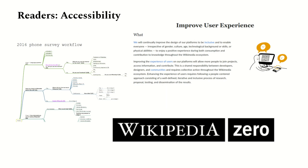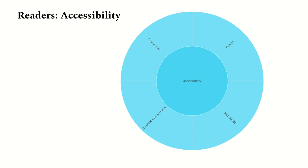The next phase set in the readership dimension is accessibility. The accessibility gap reflects all those technical barriers which prevent people from accessing free knowledge. Gaps in the accessibility phase set are inspired by the improved user experience recommendation of the 2030 movement strategy, which encourages everyone in the movement to build more inclusive platforms, interfaces, and knowledge services so that Wikipedia and sister projects can be accessed by people with different accessibility issues, including internet connection or physical disabilities.